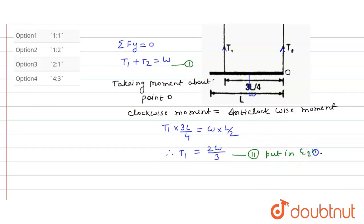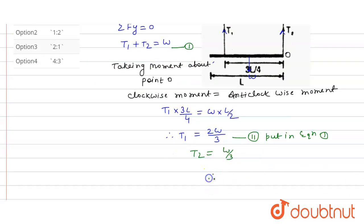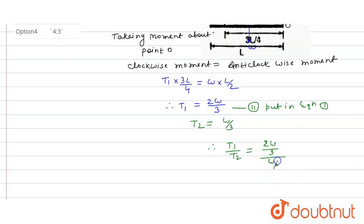We have to find the ratio T1 by T2, which will be 2W upon 3 upon W by 3. That is equal to 2 by 1. So the ratio will be 2 by 1.